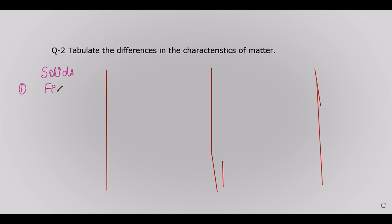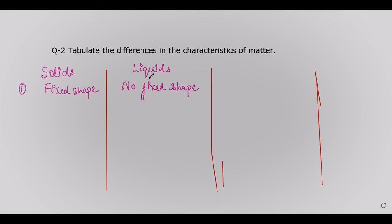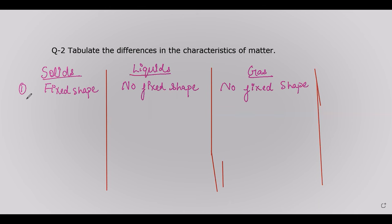For shape: solids have a fixed shape. Liquids do not have a fixed shape — a particular volume of water can take the shape of a glass, container, or bucket, because liquids have more space in between their particles. Gases also do not have a fixed shape.